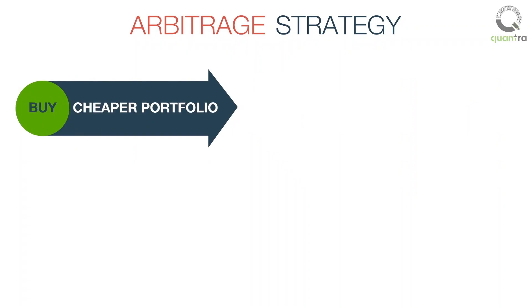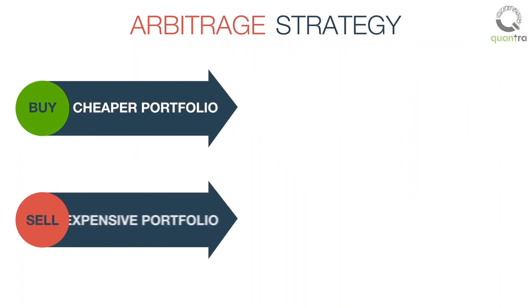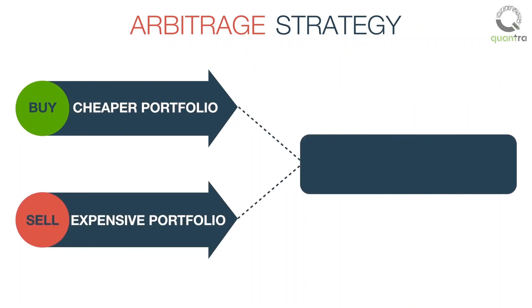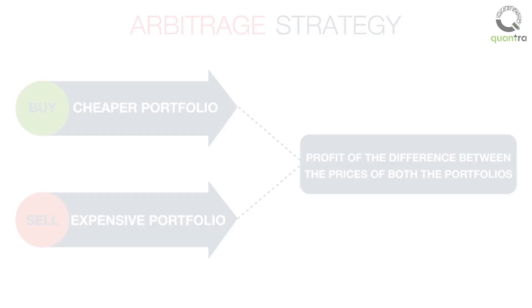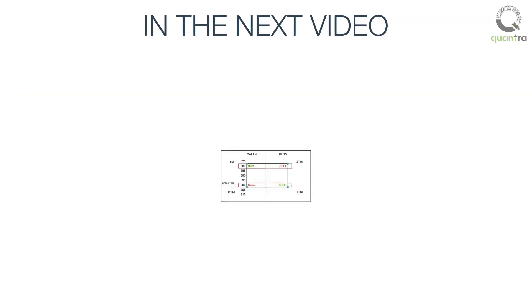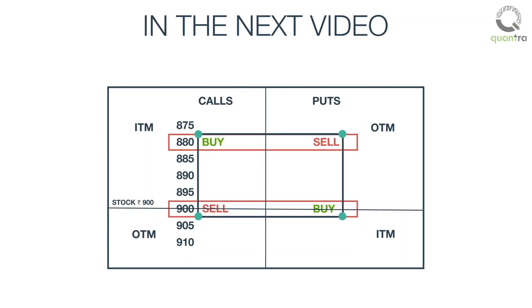In a nutshell, we buy the portfolio which is cheaper and sell the expensive one, and make a profit of the difference between the prices of both the portfolios. That's all for this video lecture. In the next video, we will understand the box trading strategy.